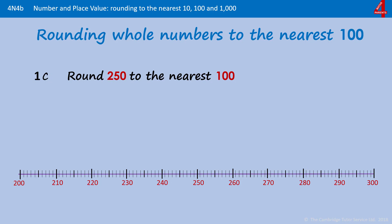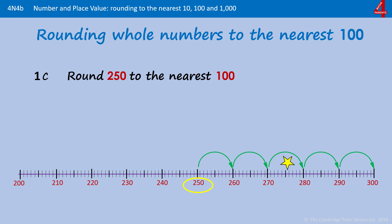250 rounded to the nearest 100. Pause the video and have a go. 250 is an equal distance from 200 and 300, but the rule is we round up if it has 50. 250 rounded to the nearest multiple of 100 is 300.